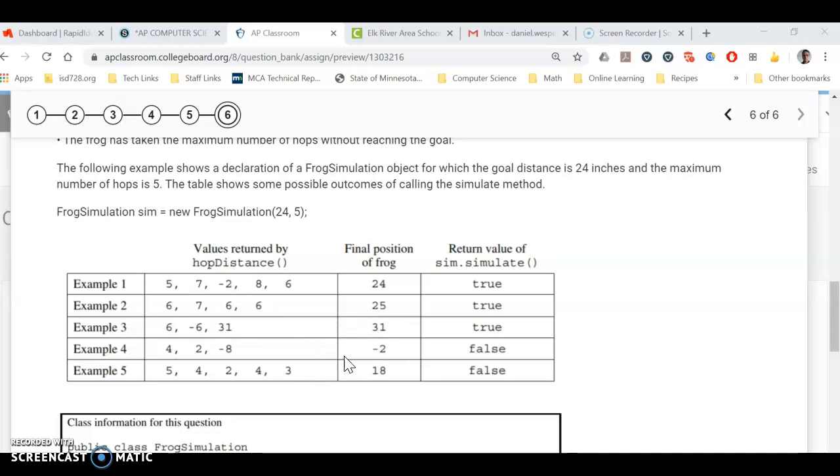Example four would be a false one because we went negative. So we don't even hop anymore. And then example five, we did all our hops at max of five and still didn't make it. So those are pretty good examples or test cases for you to think about when you're programming part A.